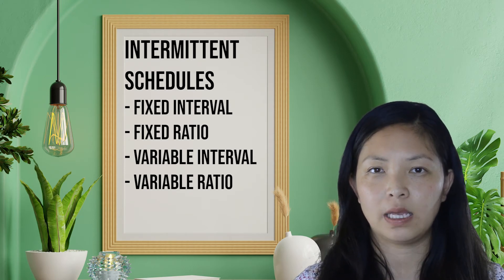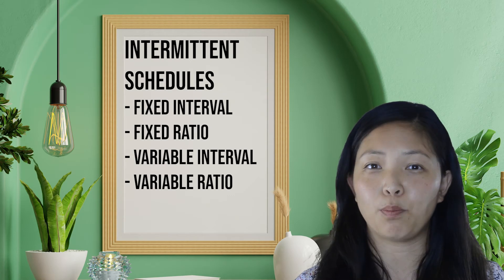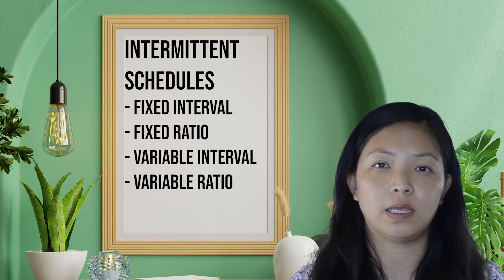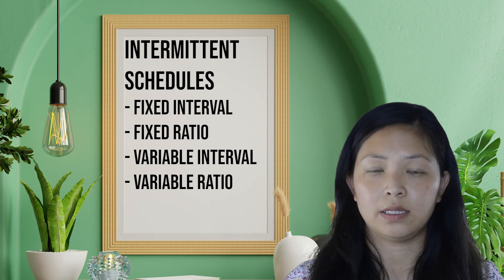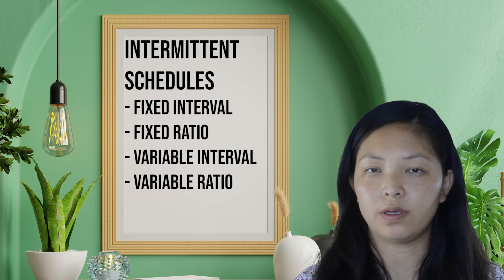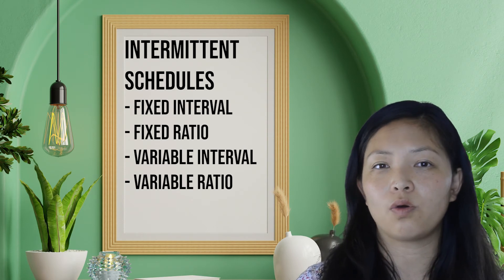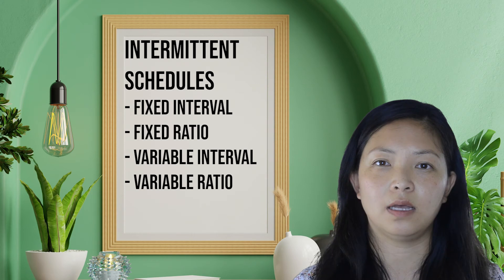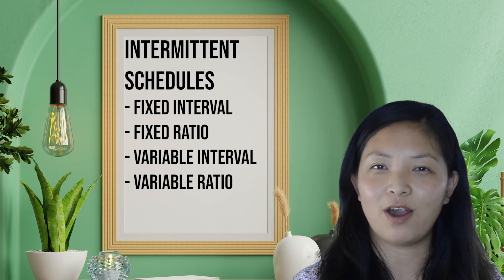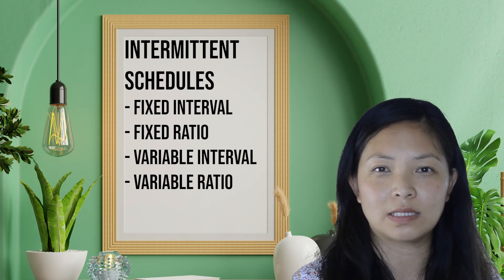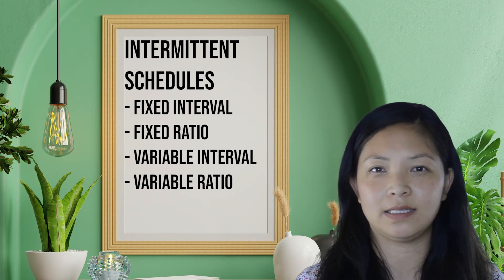Next is variable interval schedules, which refers to getting a stimulus at various set times. At a lot of workplaces, promotion is an example — you don't know how many years you have to work in this position to get promoted. Another example is when managers walk through the assembly lines to supervise at various times. This type of stimulus works well in shaping new behaviors. One example: a community had huge theft issues, but securities went on runs five or six times a day at fixed times, so thieves knew the pattern. Someone proposed changing to a variable interval schedule — security going out at random times instead — and that solved the problem right away. It was very efficient and didn't cost anything.